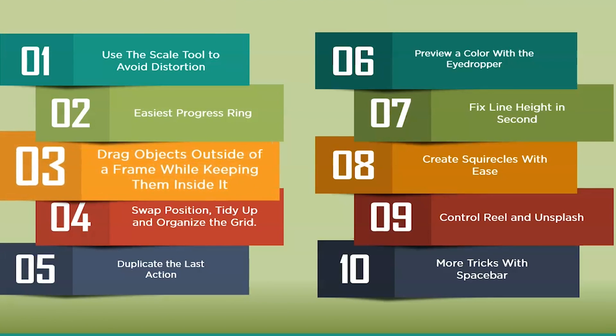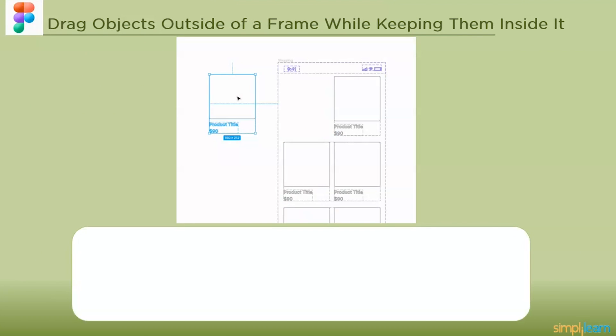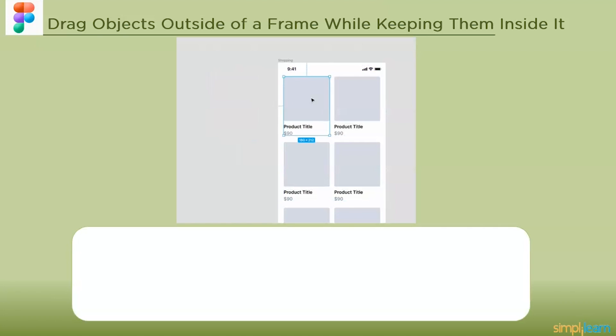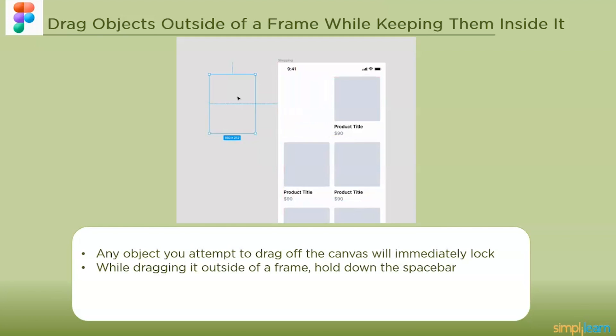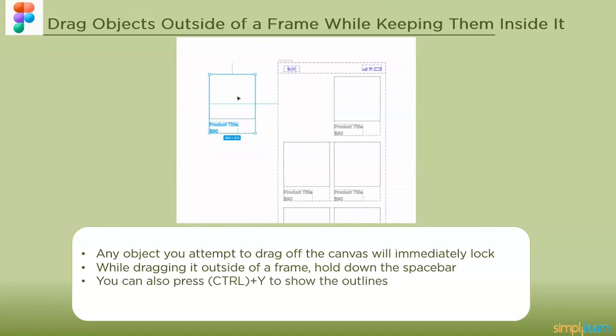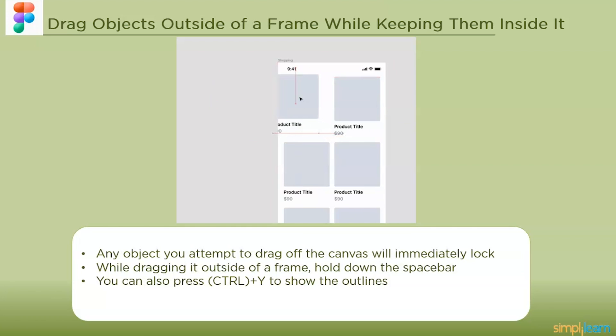The next one is drag objects outside of a frame while keeping them inside it. An object can be dragged so far. Any object you attempt to drag off the canvas will immediately lock back into position. To keep an object inside a container while dragging it outside of a frame, hold down the spacebar. In order to view the object while it is outside of the container you may also disable clip contents for the frame that includes the item.